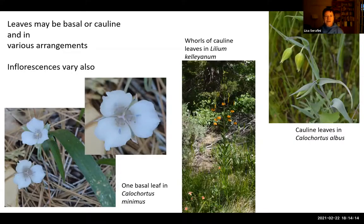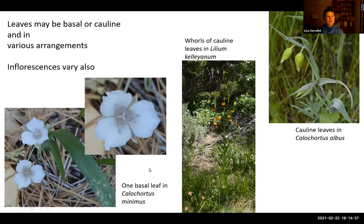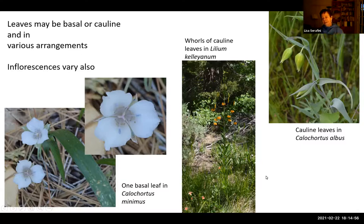Now let's take a look at the leaves. The leaves may be basal — at the base of the stem — or colline, arranged up higher on the stem, and there can be various arrangements. For instance, this Calochortus has a single basal leaf, while this other Calochortus has colline leaves, up higher on the stem. This particular lily actually has whorls of leaves on the stem — somewhere around four, six, or seven whorls. So leaf arrangement can vary quite a lot.